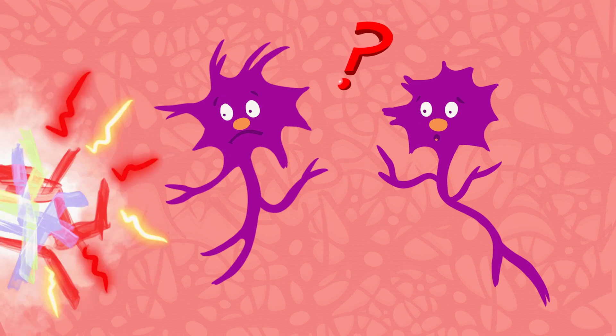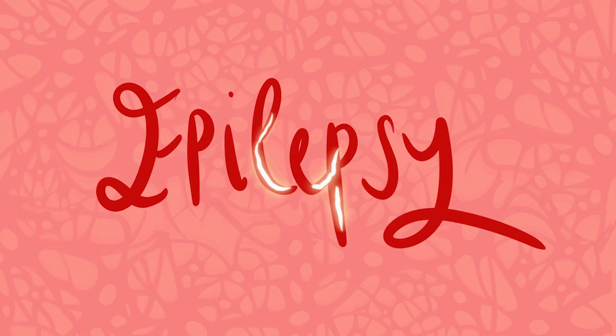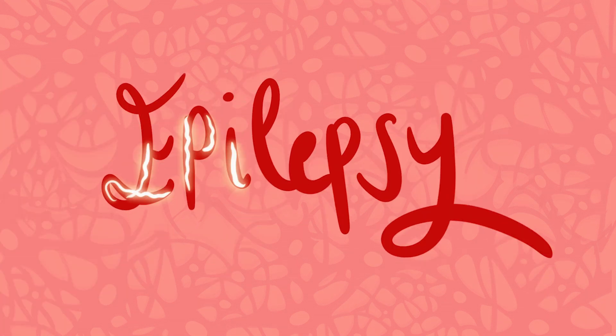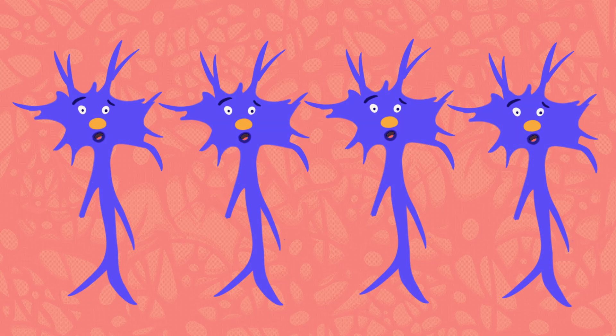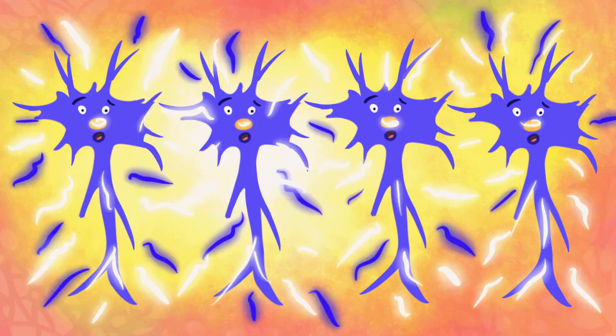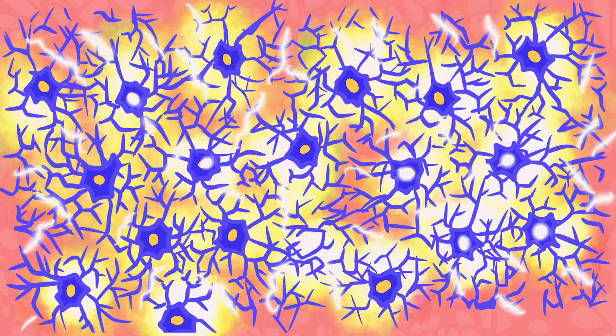What's that? That's exactly what happens during an epileptic seizure. Epilepsy is a neurological disorder affecting more than 50 million people worldwide. And it's defined as the occurrence of multiple seizures due to malfunction of some neurons in the brain, causing them to fire synchronously.